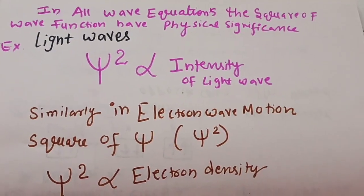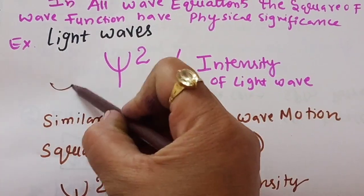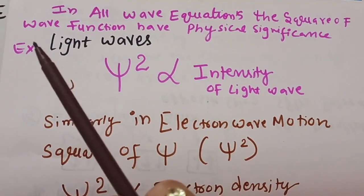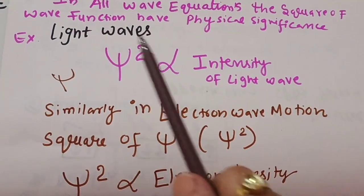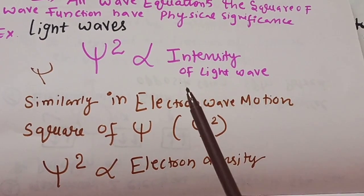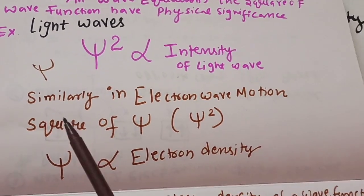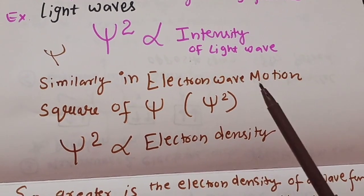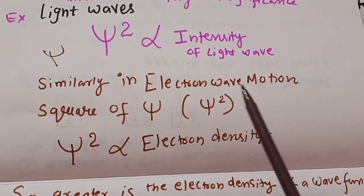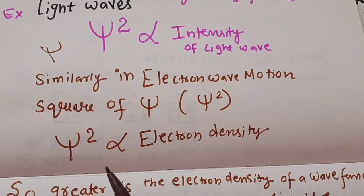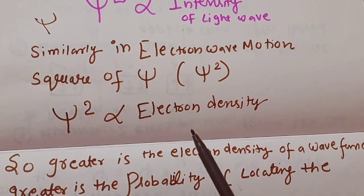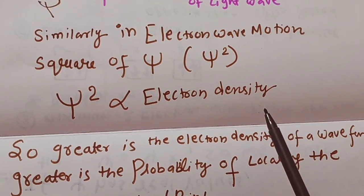Any wave function — if it is only psi — does not have physical significance. For example, if we see light waves, the square of the wave function is proportional to the intensity of the light waves. Similarly, if we consider electron wave motion, the square of psi — that is psi squared — also has physical significance and it is proportional to the electron density.